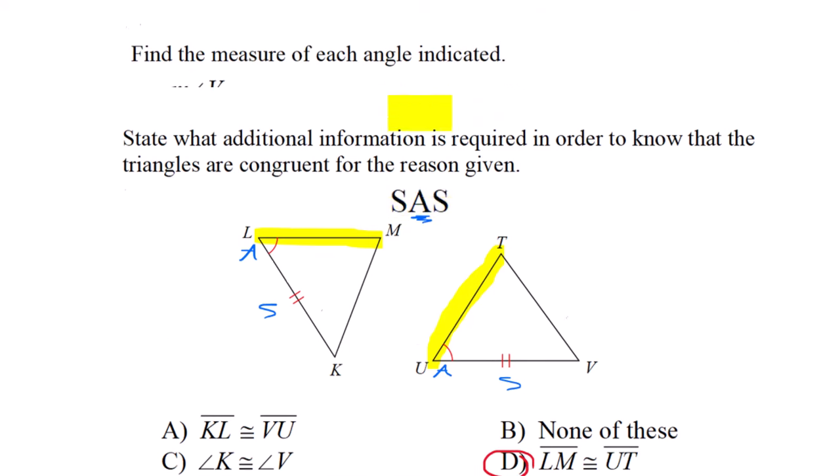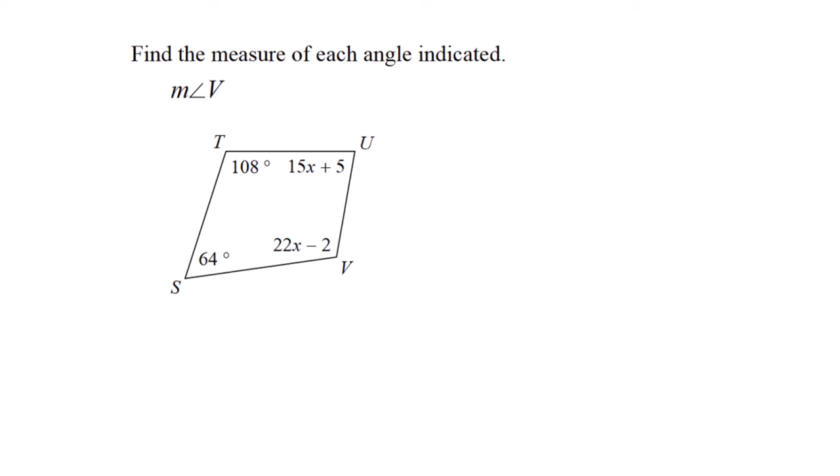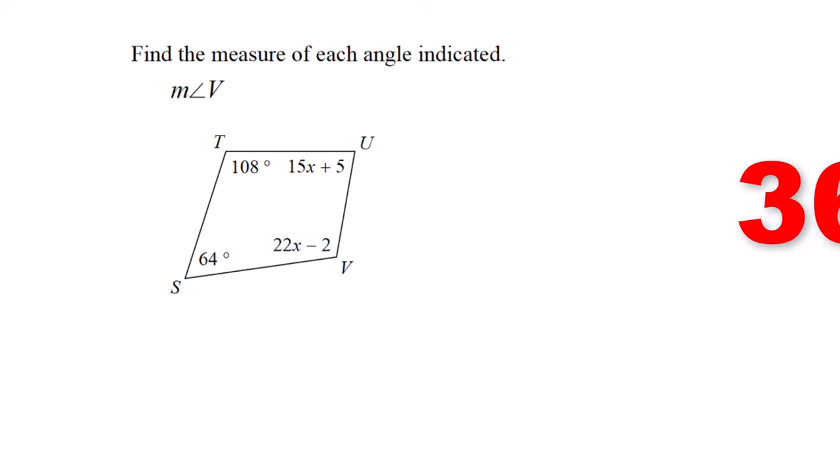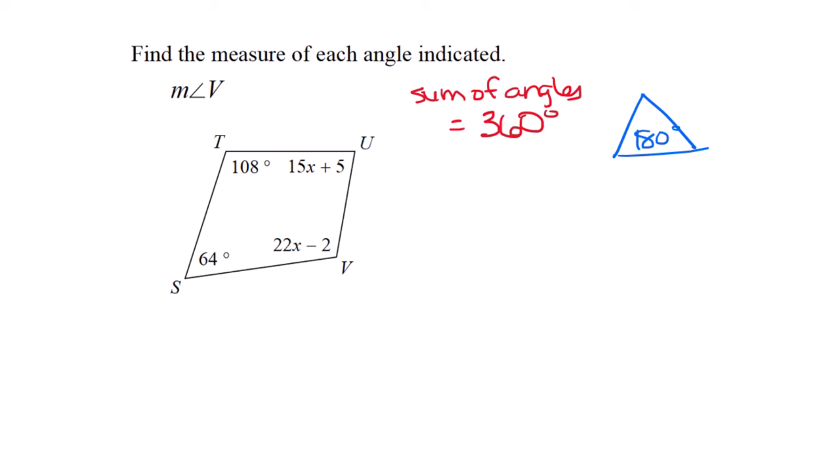We have a quadrilateral. All angles in a four-sided figure must equal 360 degrees, similar to triangles adding to 180. To simplify, I'll add 64 and 108, which equals 172. And 15x plus 22x is 37x, 5 minus 2 is 3. So 37x plus 3 plus 172 equals 360.